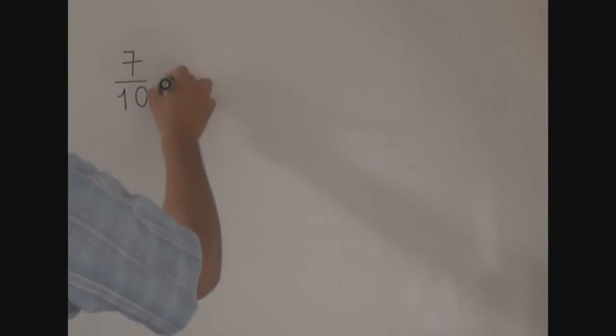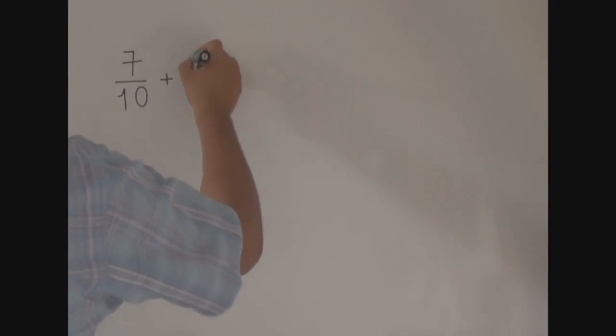The fractions we have here are 7 over 10 and 14 over 15. The denominators of these two fractions are 10 and 15. These denominators are different. How do we add these fractions that have different denominators?